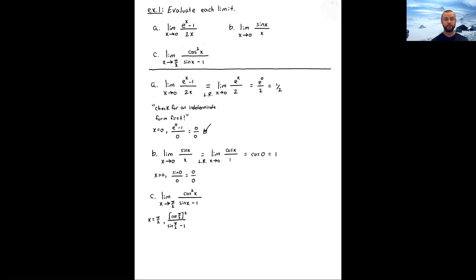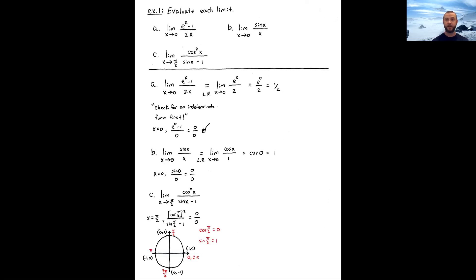Part (c) is a bit trickier due to the trig. We're letting x approach π/2 and checking for an indeterminate form. The numerator is cos²(x) — we first compute cos(π/2) and then square it. The denominator is sin(π/2) − 1. From the unit circle, the point at angle π/2 radians is (0, 1), so cos(π/2) = 0 and sin(π/2) = 1.